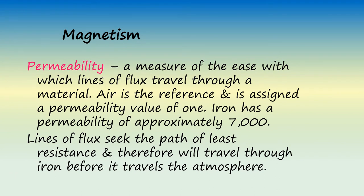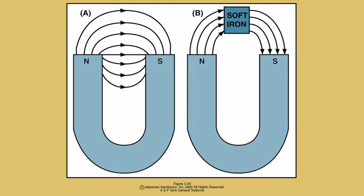Permeability is a measure of how easily lines of flux travel through a material. Air is the reference and is assigned a permeability value of 1. Iron has a permeability of approximately 7,000, which means that lines of flux travel through iron 7,000 times more readily than they do through air. Lines of flux seek the path of least resistance and therefore will travel through iron before they travel through the atmosphere. In the diagram of a horseshoe magnet on the left, we see lines of flux leaving the north pole of the magnet, traveling through the air and entering back into the south pole. In the magnet on the right, a piece of iron is placed in proximity to the poles of the magnet. This drawing illustrates how the lines of flux more readily travel through the iron than they do through the air.